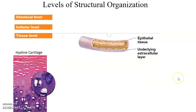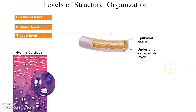The tissue level focuses on cells that are working together to perform some function. Almost all of our structures are made up of tissues of one kind or another. For example, here is a view of hyaline cartilage, and a blood capillary made up of epithelial tissue — these are the tissues that make up our structures.